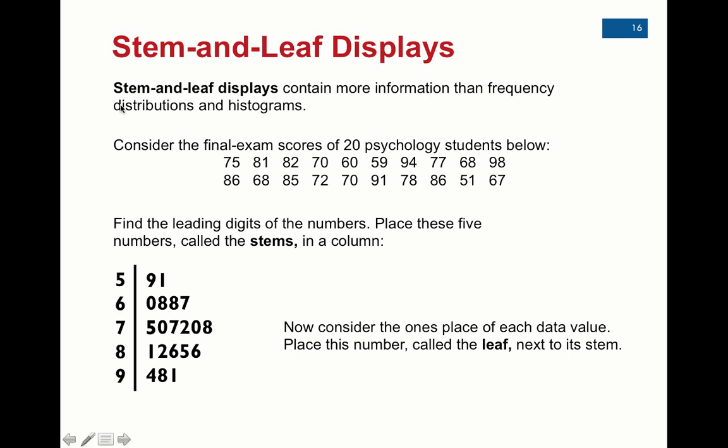The leaf, the numbers on the right here, are always the last digit of the data. So in this case, that's going to be the ones place. The stem, the values on the left, are the numbers to the left of the leaf. So in other words, this is going to be the tens place. If the ones place is going in the leaf, then it must be the tens place, in this case, that is going in the stem. If you look at this data set, it ranges from 50 to 90-something.